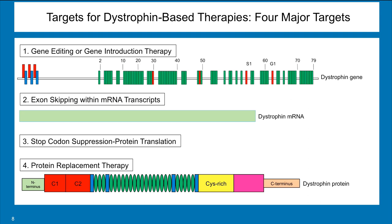At the top of this slide is an illustration of the dystrophin gene, and there are two major strategies targeted at this dystrophin gene. One, which is a newer therapy, involves gene editing to try to go in and directly fix the mutation responsible for the disorder. The second approach, which at this point seems a little easier to do, is a gene introduction therapy — more of a classic gene therapy — trying to bring in a new or alternative version of the dystrophin gene to take over for the mutant gene.